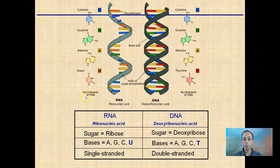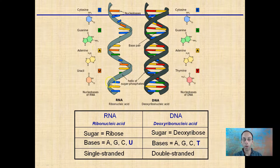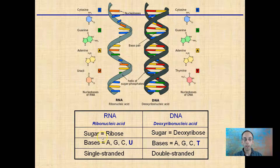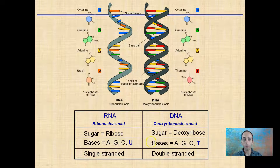Here's a nice comparison between our RNA and our DNA. Remember, RNA is ribonucleic acid and DNA is deoxyribonucleic acid. The sugar in RNA is ribose, and in DNA it's deoxyribose — meaning without oxygen for DNA, while ribose has that oxygen bonded to it. The bases are A, G, C, and U for RNA, and A, G, C, and T for DNA.